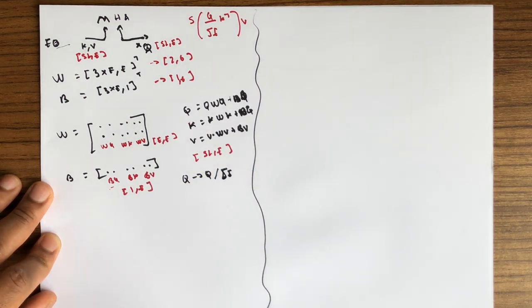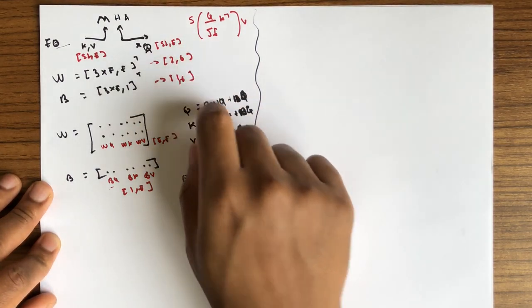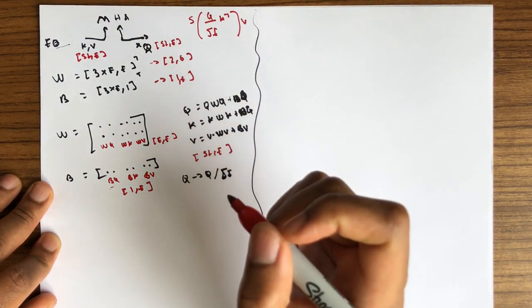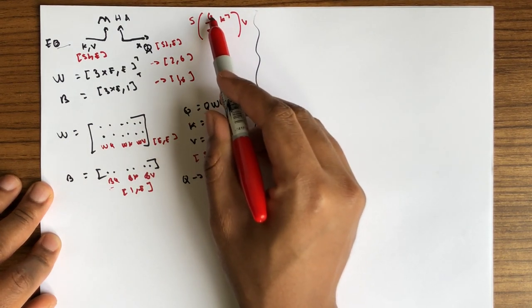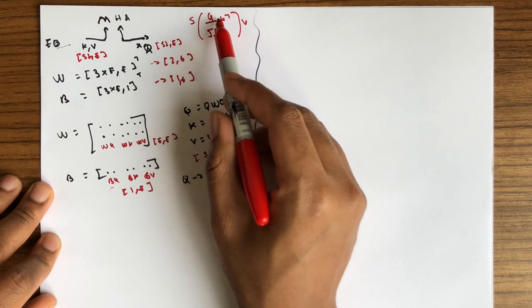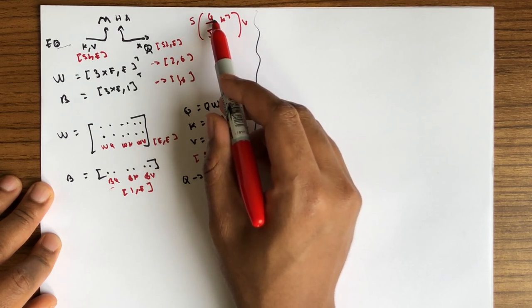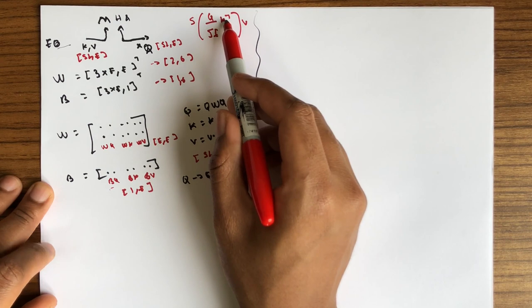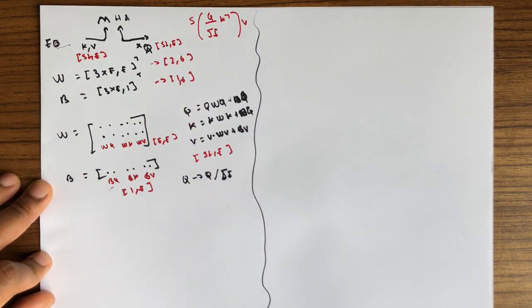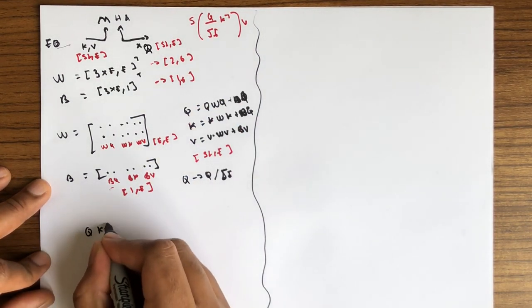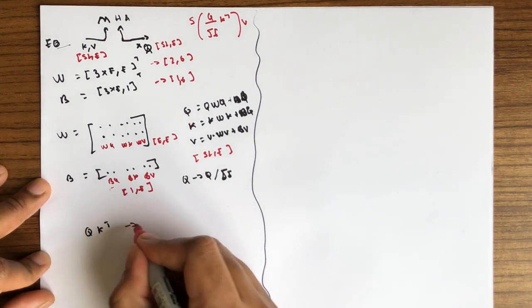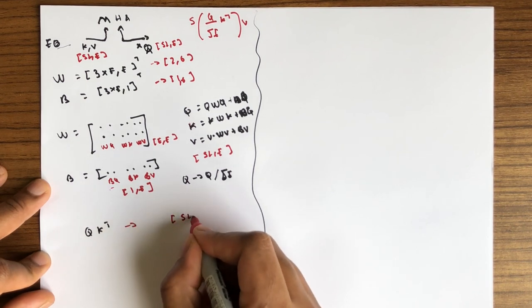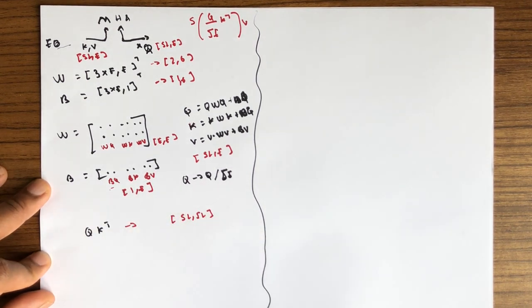Then we need to multiply the new query by key transpose. We know their dimensions, so we'll end up with a tensor of dimension sl by sl.